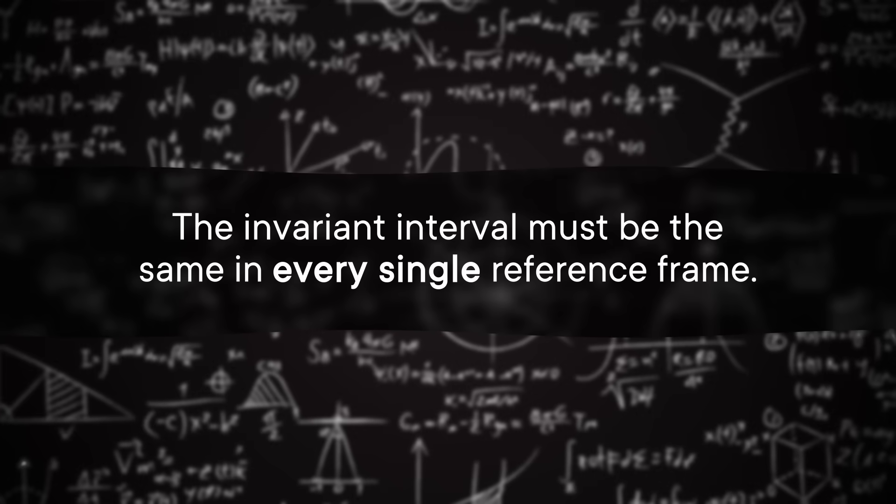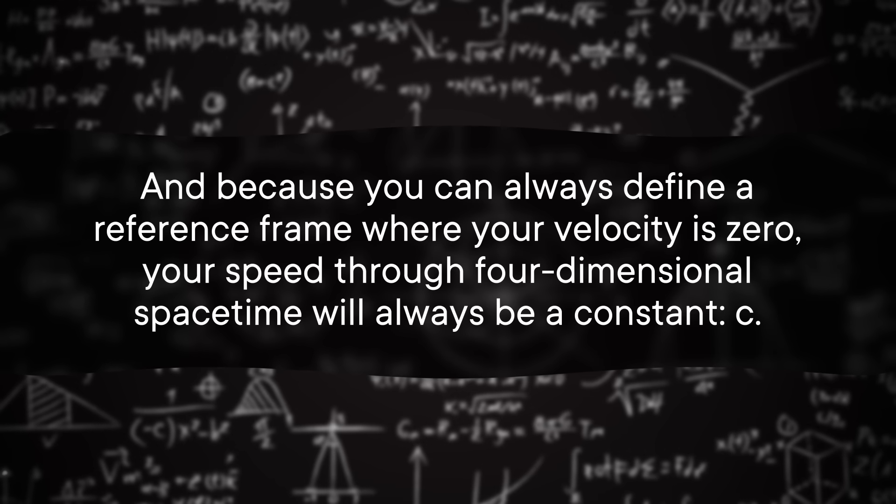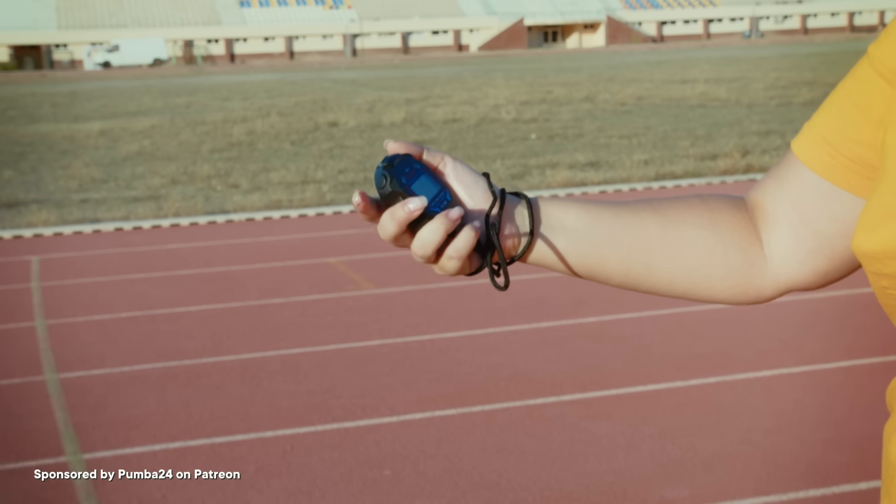The invariant interval must be the same in every single reference frame. And because you can always define a reference frame where your velocity is zero, your speed through four-dimensional spacetime will always be a constant C. You can swap this example for any reference frame and any object, proving that everything in the whole universe is traveling through spacetime at C. And if someone ever measures you traveling slower than that — including yourself — it just means they're probably only measuring your movement through space. It is difficult to stop thinking of living in just a 3D space, but we need to think beyond that to understand how weird and awesome reality is. We are embedded in a 4D spacetime traveling alongside the rest of the universe at a constant speed, C — which is probably much faster than you expected. And in light of all this, maybe we should rename C the speed of everything.